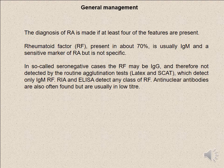The diagnosis of rheumatoid arthritis is met if at least four features are present. Rheumatoid factor, present in about 70% of cases, is usually IgM and is a sensitive marker of rheumatoid arthritis but is not specific. In seronegative cases, the rheumatoid factor may be IgG and therefore not detected by routine agglutination tests such as latex and SCAT — which detect only IgM — but may be detected by RIA or ELISA, which detect any class of rheumatoid factor. Antinuclear antibodies are also often found but are usually at low titre.